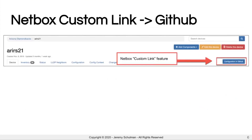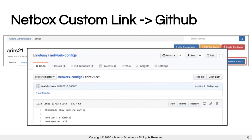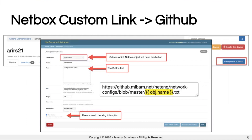One of the other features I was introduced to recently was the custom link feature. This allows us to add buttons to device pages. We've added a button that says, for this particular device, go right to GitHub so I can see the configuration that was last backed up. If I click that button, it takes us to our enterprise GitHub environment directly to that device config, which is really cool. Setting that up takes about three to five seconds in the administrative page — you pick the area of NetBox you want to create the button for, give the button some text, reference the device object name into the URL, and select the new window option. It reduces the friction between going from one system to another.